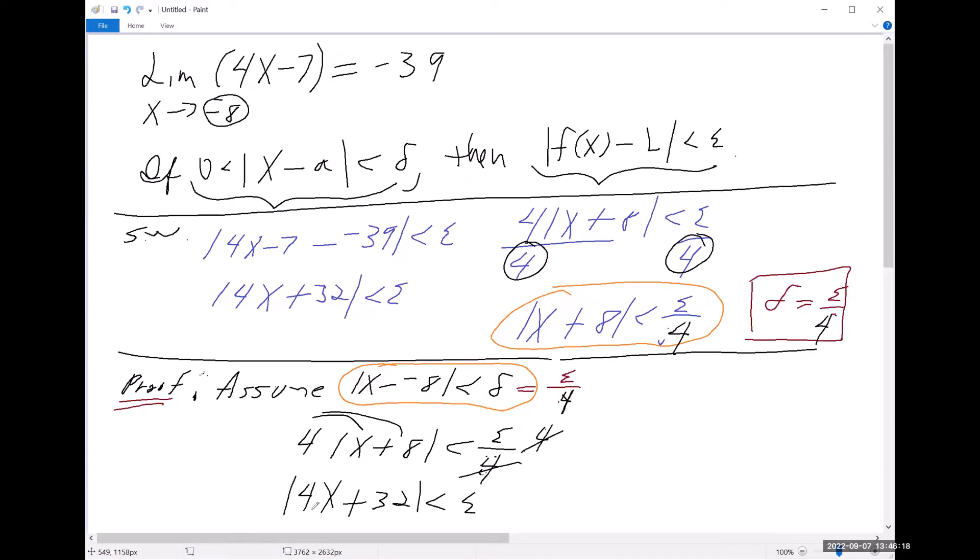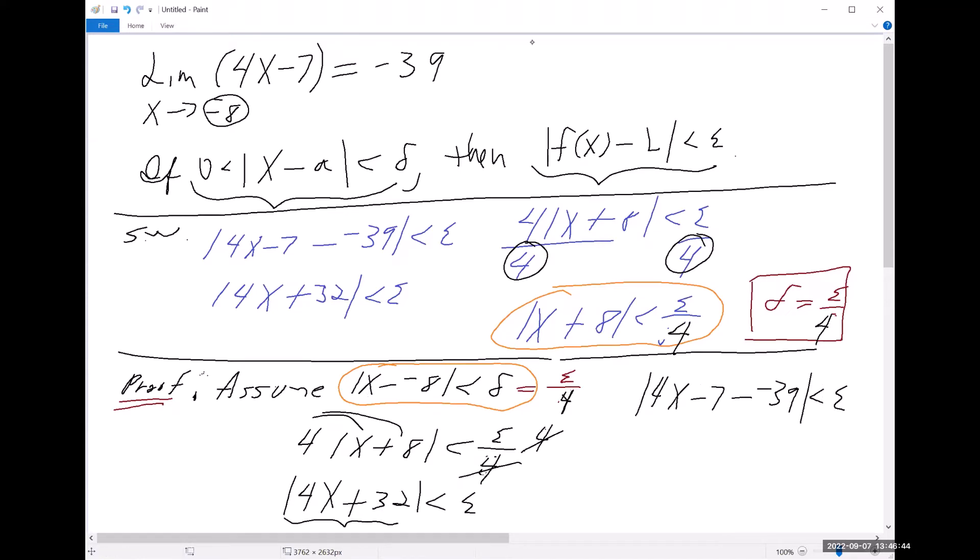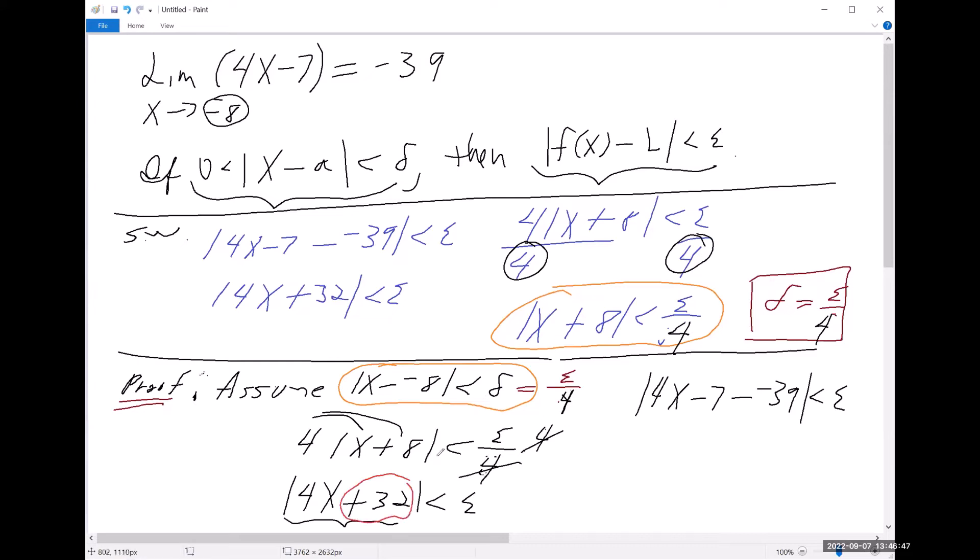Four x minus negative 39 is less than epsilon, right? So I basically took this plus 32, and I just wrote it this way. It means the same thing.